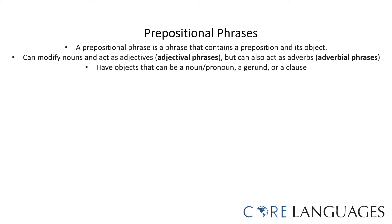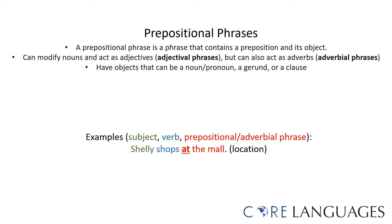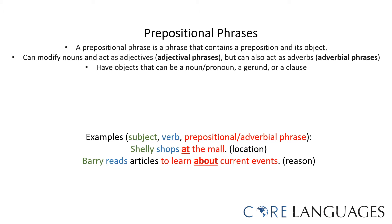Prepositional phrases have objects that can be a noun or a pronoun, a gerund, or a whole clause. Here are some examples. Shelly shops at the mall. 'At' is the preposition. 'At the mall' is the prepositional phrase that indicates the location. Barry reads articles to learn about current events. 'About' is the preposition, and 'to learn about current events' is the prepositional phrase that indicates the reason why Barry reads articles.